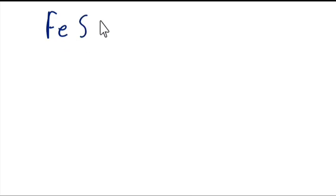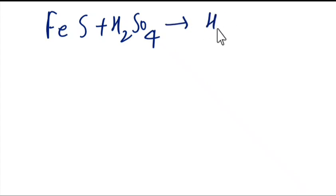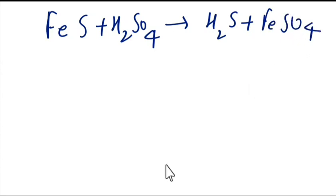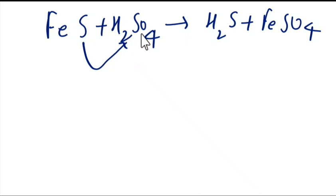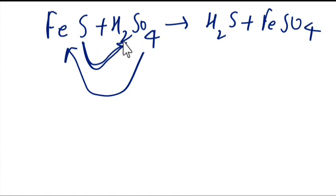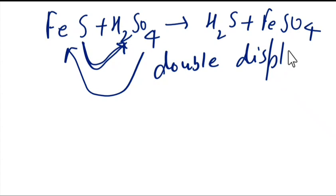When iron sulfide reacts with H2SO4, there is an exchange of ions — sulfur exchanges with hydrogen, and sulfate pairs with iron. Because two ions are exchanged, this is a double displacement reaction.